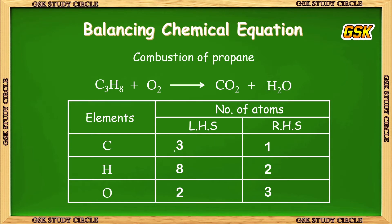First we try to balance the number of carbons. On LHS the number of carbons is 3, and on RHS it is 1. So we multiply CO2 by the coefficient 3, making carbons on RHS equal to 3. But multiplying by 3 also affects oxygens: 3 times 2 is 6, plus 1, so total oxygens on RHS become 7.